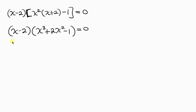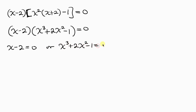There are two cases. The first case is x - 2 = 0. Moving -2 to the right, it becomes positive, so x = 2. That is our first value for x.